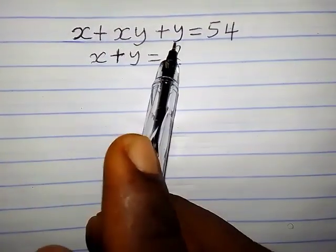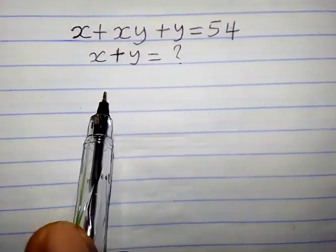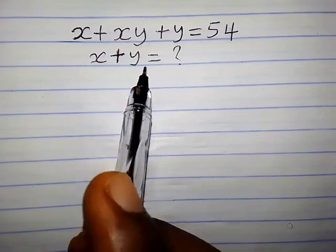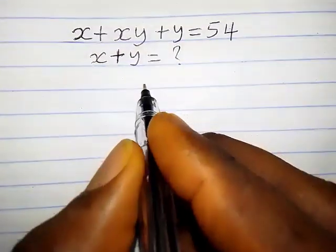We have x plus xy plus y equals 54. So how do we find x plus y in this kind of only pair math question?